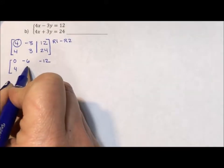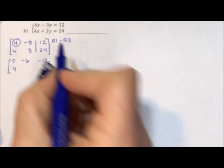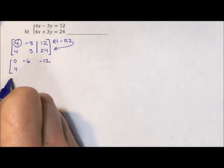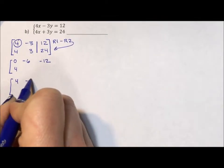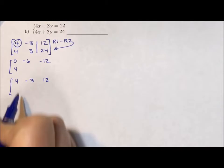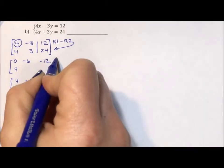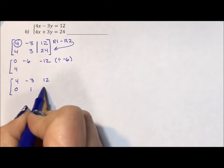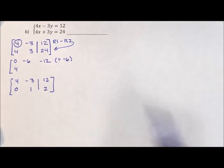And then this second row, I should probably put that down there. Sorry, the first row should not change: 4, negative 3, 12. That becomes the second row, 0. But I'm going to divide by negative 6: 0, 1, 2. And now we know what our y variable equals.